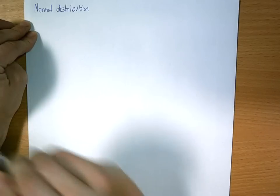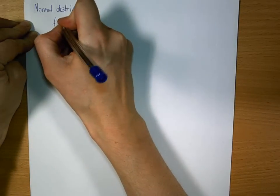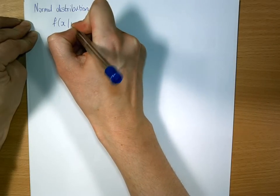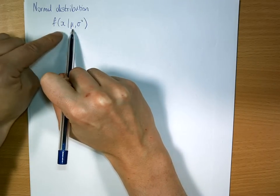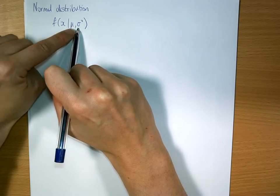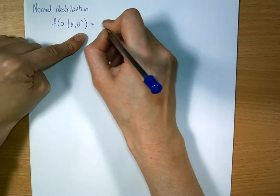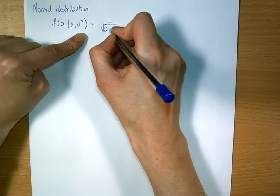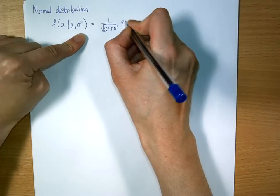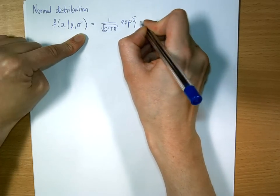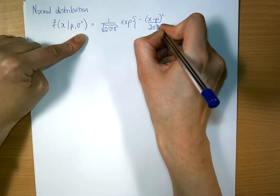If you remember the form of the normal distribution, you have two parameters instead of one. So f of x given mu and sigma squared is 1 over the square root of 2 pi sigma squared times the exponential of x minus mu squared over 2 sigma squared.